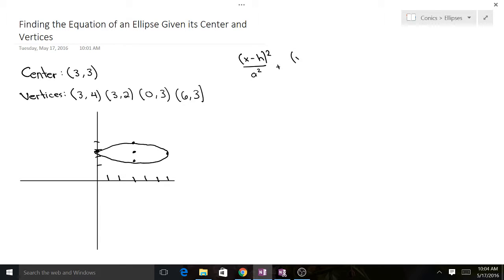We've got this one where it's x minus h squared over a squared plus y minus k squared over b squared equals 1. Or we have the other one where we just swap which value gets the a squared. Y minus k over a squared plus x minus h squared over b squared equals 1.